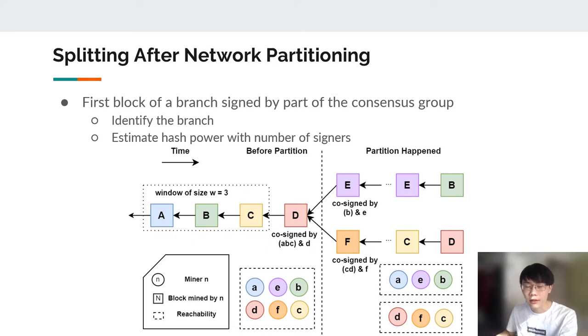When a network partition happens, the new block may not reach everyone in the consensus group, so it will be signed by only part of the group. When a block with less than W miners is published, every node in that region knows that the network has been partitioned, and they can identify which branch they are working on with the signature of that block. Also, the hash power of that region can be estimated with the number of signers. For example, miner A, B, E after partition they are in one region, and miner E mines a new block capital E. The consensus group of E should be B, C, D, but now it can only reach B. So block capital E will be signed by only B. Now A, B, E can identify their branch with the signature of block E, and the branch size is 1, which has one third of the consensus group. In this way, the chain will be split into branches after partition, and each region will have exactly one branch.